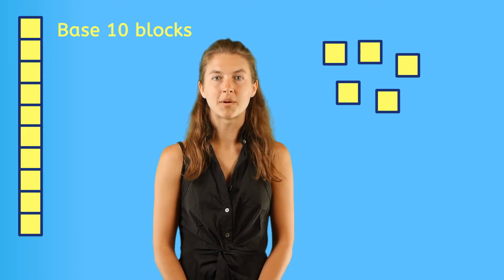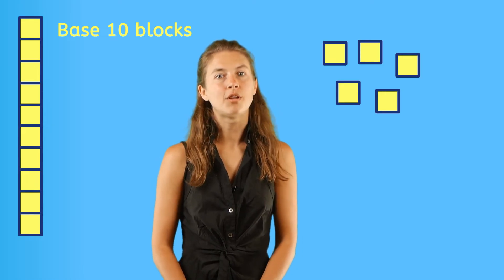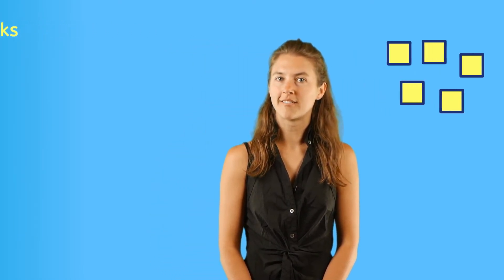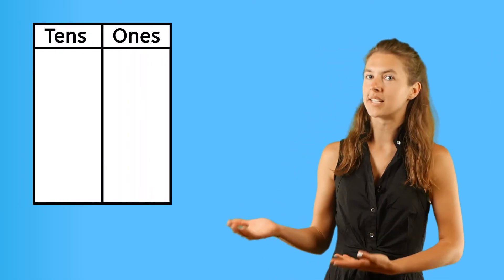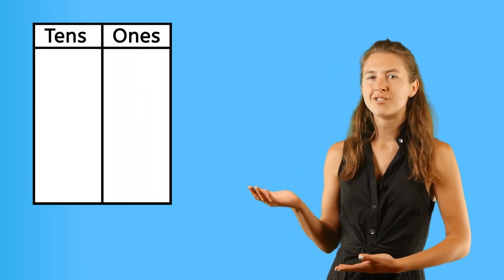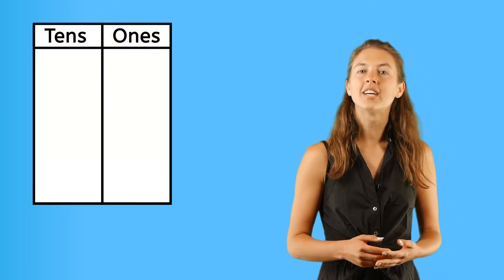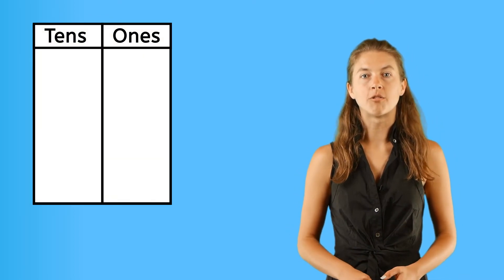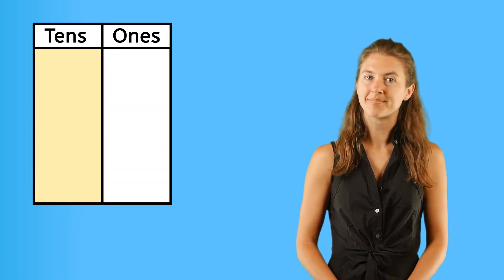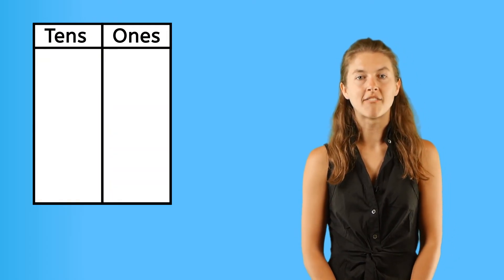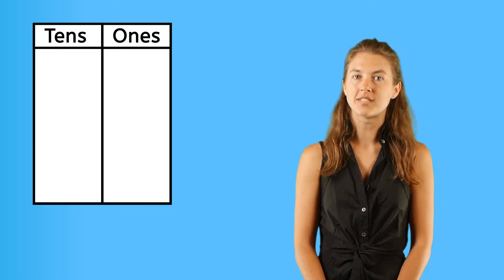Now let's look at how this number pattern of base ten can be used on a place value chart. This is a place value chart. Do you notice the different columns with different headings? When looking at place value, we work from the right side to the left side. On the right, we have the ones place, and on the left, you see the tens place.